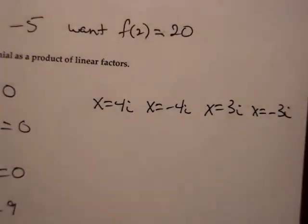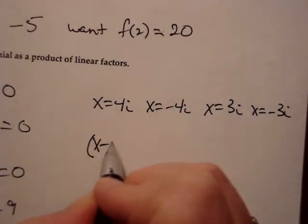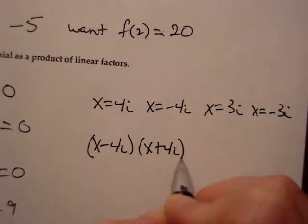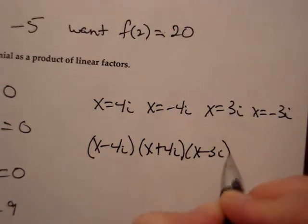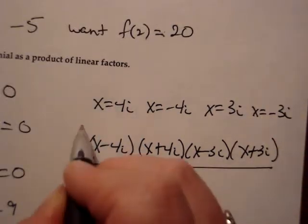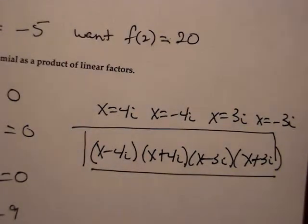I can build the factors from the zeros. That means x minus 4i times x plus 4i times x minus 3i times x plus 3i are the factors of the original polynomial. So you see how, once we find the zeros, it shows us how to factor any polynomial. And that's the end of section 3.4.